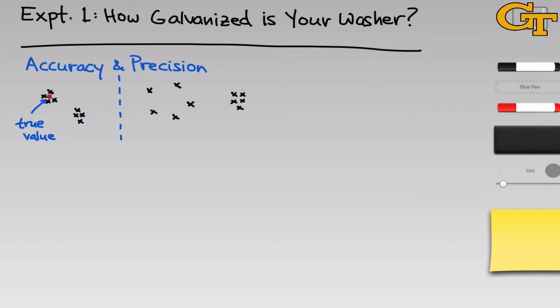We might represent that, for example, with a line from the mean values in blue to the true value in red. We can see that the second blue line here is much longer than the first, so the set of measurements over here is much less accurate than the measurements on the left.